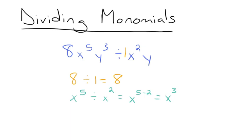And now we move on to our y terms. We'll have y cubed divided by y. Remember, anything without an exponent is raised to the first power. So this is equal to y to the 3 minus 1, which is equal to y squared. Our division is equal to these three things multiplied together: 8x cubed y squared.